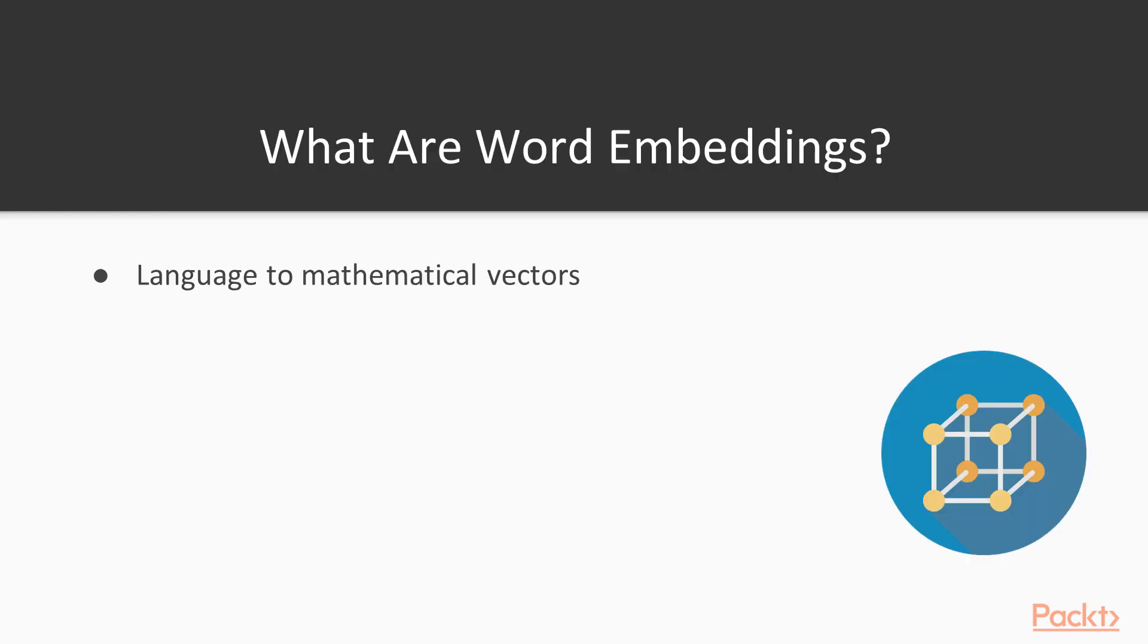So what exactly are the bloody things? Well, remember when we talked about making mathematical vectors out of language words to do machine learning with? Well, word embeddings are actually one and the same thing. The type of vectors though, and how we obtain them, are completely different.